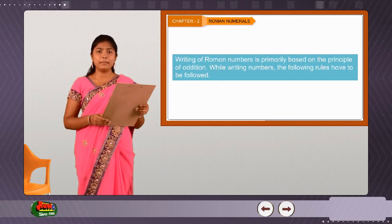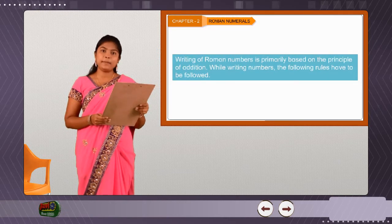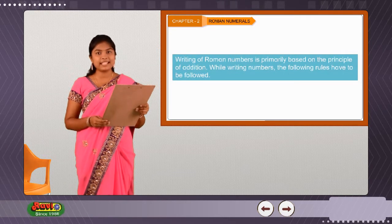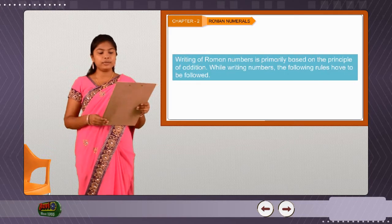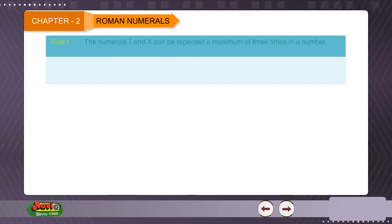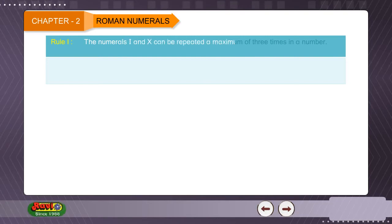Writing of Roman numbers is primarily based on the principle of addition. While writing numbers, the following rules have to be followed. Rule 1. The numerals I and X can be repeated a maximum of 3 times in a number.